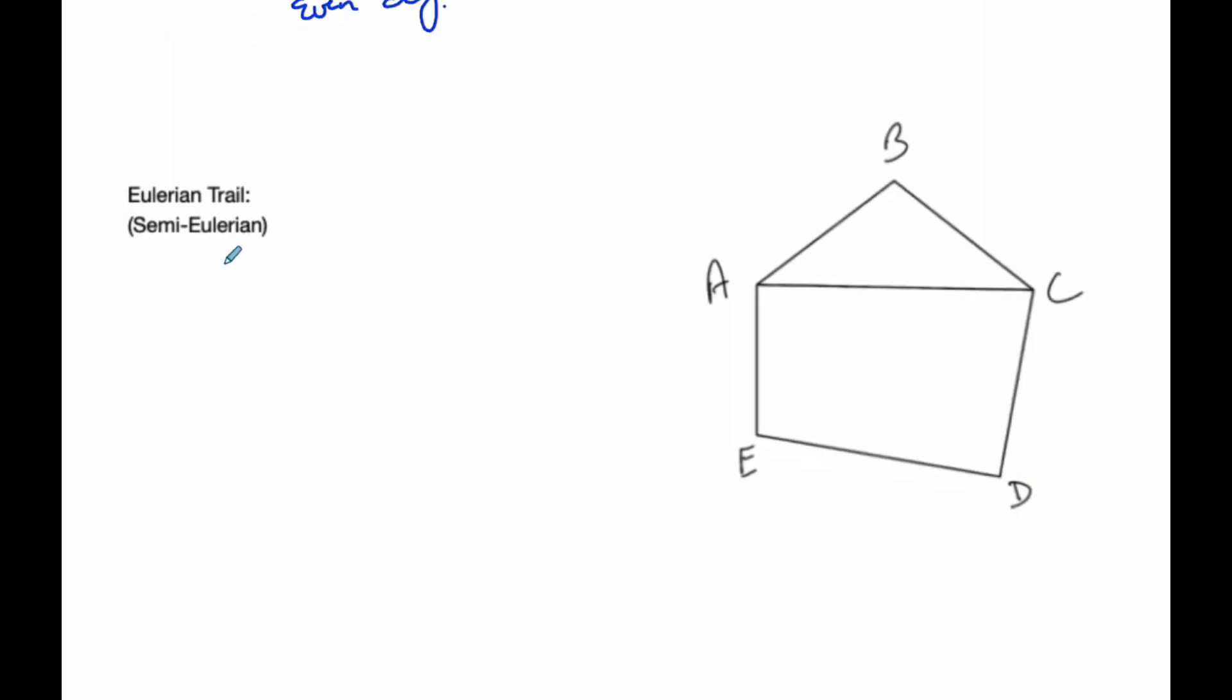Okay, so there are also what we call Eulerian trails, and these graphs are semi-Eulerian. And so an Eulerian trail is simply a trail, so the edges are not repeated, which travels every edge exactly once, but does not start and end at the same point. And so if we also notice this, if we look at our degrees, this here has a degree of 3, 2, 3, this is 3, 2, and 2.